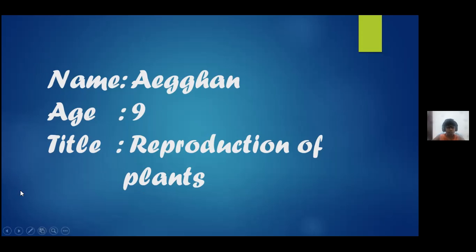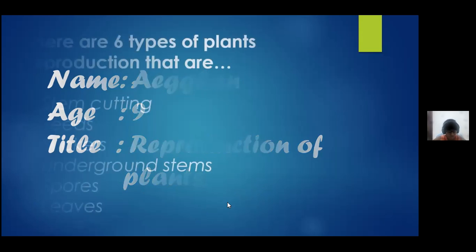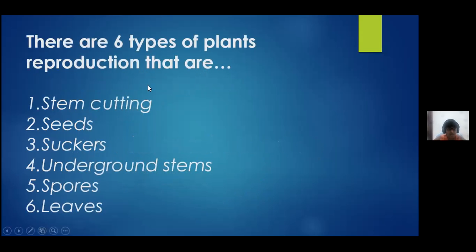And there are also various ways of plant reproduction. There are six types: stem cutting, spores, leaves, underground stems, suckers, and seeds.